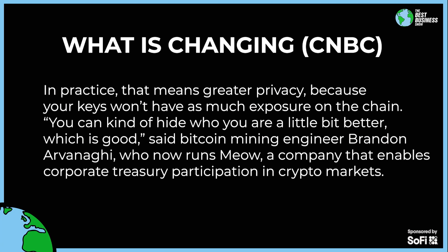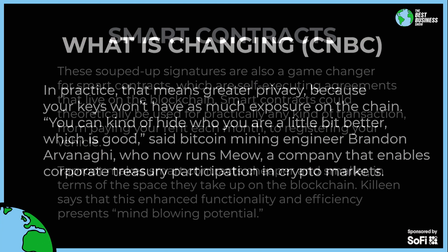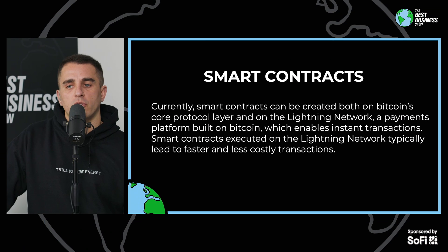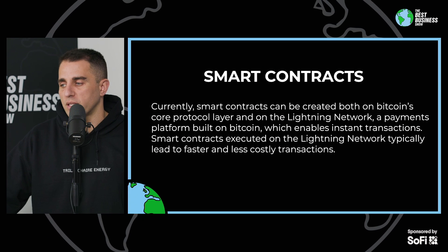On top of that, we have the smart contracts. These are souped-up signatures that are a game changer for smart contracts — self-executing agreements that live on the blockchain. Smart contracts could theoretically be used for practically any kind of transaction, from paying your rent each month to registering your vehicle. Taproot makes smart contracts cheaper and smaller in terms of the space they take up on the blockchain. Currently, smart contracts can be created on Bitcoin's core protocol layer and on the Lightning Network, a payments platform built on top of Bitcoin enabling instant transactions. Smart contracts executed on the Lightning Network typically lead to faster and less costly transactions.